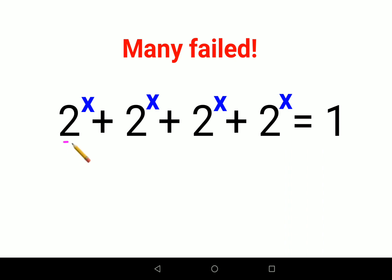We have 2 raised to x plus 2 raised to x plus 2 raised to x plus 2 raised to x. So what we'll do is take 2 raised to x common on this side, so we'll have 1 plus 1 plus 1 plus 1, and this equals 1.